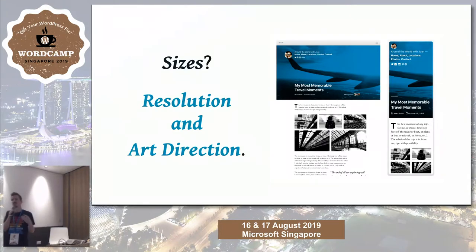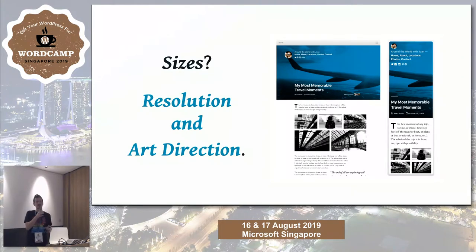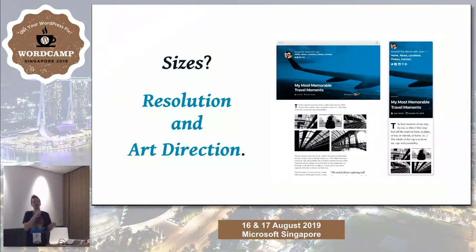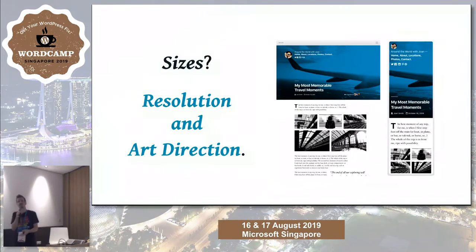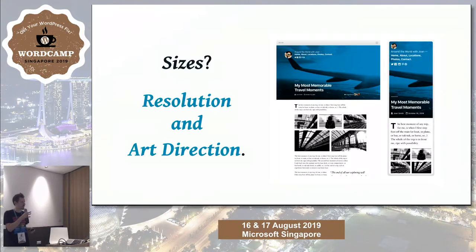Plugins and themes can also add additional sizes to the ones that WordPress generates, for art direction or different resolution reasons. For example, if you want an image to be presented as a logo but also somewhere else on your site like an about page, you could use the same original image and have it cropped a little bit differently automatically by WordPress at upload time.